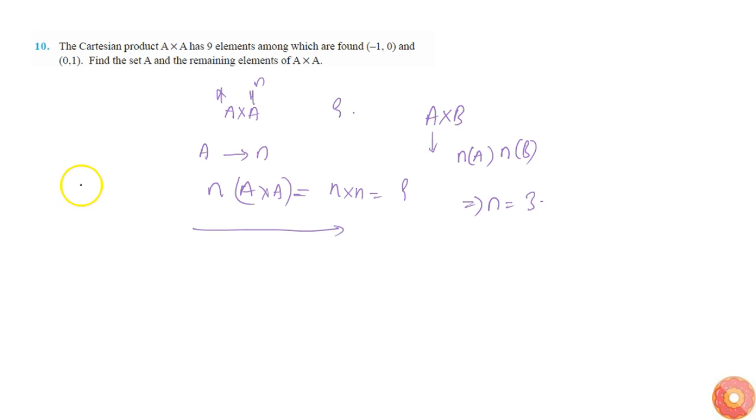Set A has 3 elements, and the other clue which we are given is that minus 1 comma 0 and 0 comma 1 belongs to A cross A.